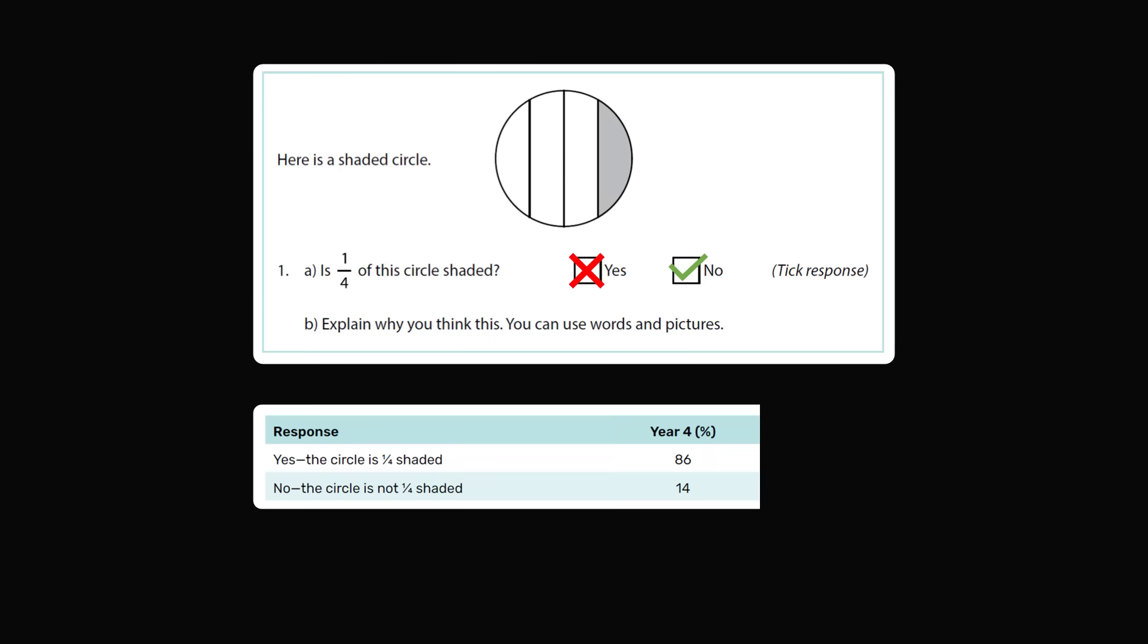So here's the statistics for year 4 students who are approximately 8 years old. 86% gave the wrong answer saying one-fourth of the circle is shaded. And only 14% gave the correct answer. Now you might think year 4 is just the beginning. People are just learning fractions and maybe over time they will learn. So you would expect four years later that more students would get the correct answer.